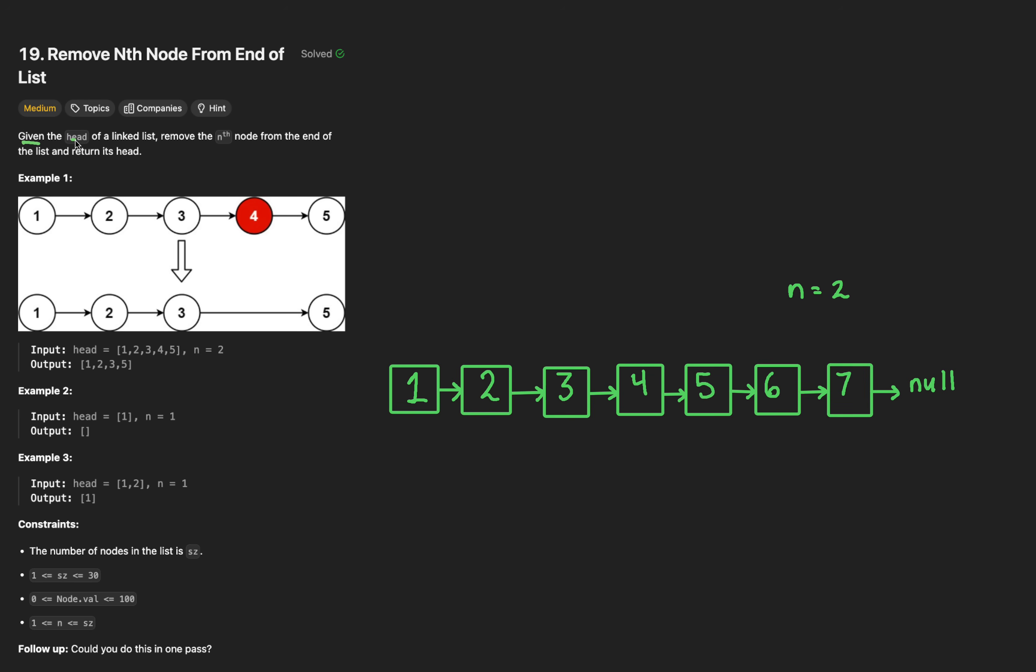We're given the head of a linked list and we want to remove the nth node from the end of the list and return its head. Simple enough, checking out our example, here's our linked list as well as an n of 2. This means we want to remove the second to last node, node 6.